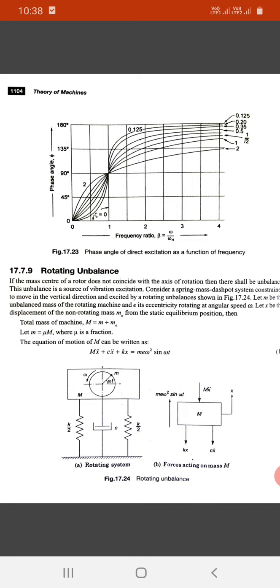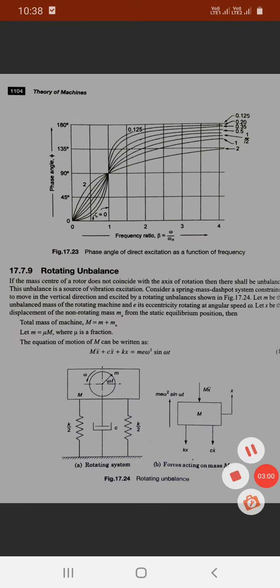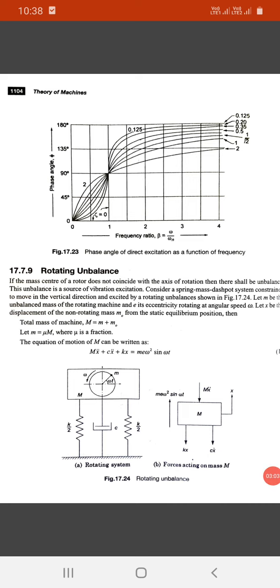The equation of motion of mass M can be written as: M times X double dot plus C times X dot plus K times X equals m e omega squared sine omega t.